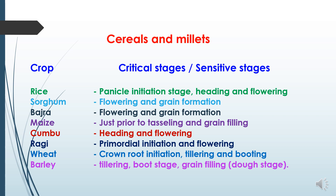Critical stages in cereals and millets: In rice, panicle initiation, heading and flowering are the most critical stages for irrigation. In sorghum, flowering and grain formation stage. In bajra (pearl millet), flowering and grain formation stage. In maize, just prior to tasseling and grain filling. In jowar (sorghum), heading and flowering. In ragi (finger millet), primordial initiation and flowering. In wheat, crown root initiation, tillering and booting are critical stages. In barley, tillering, boot stage and grain filling (also known as dough stage) are the critical stages.